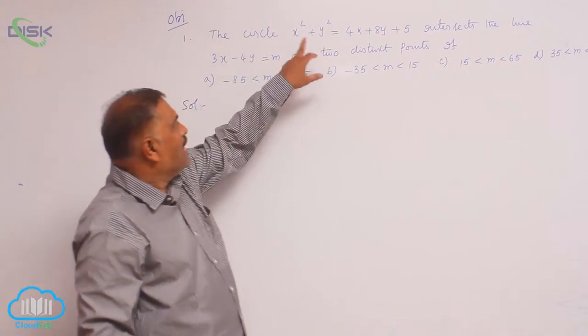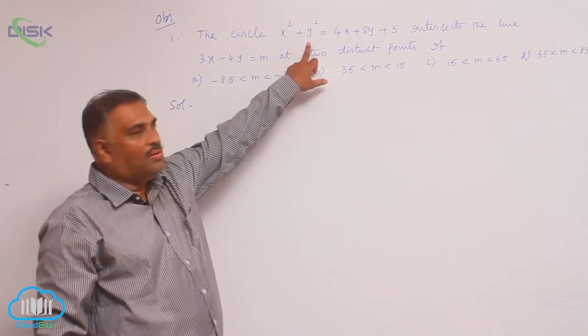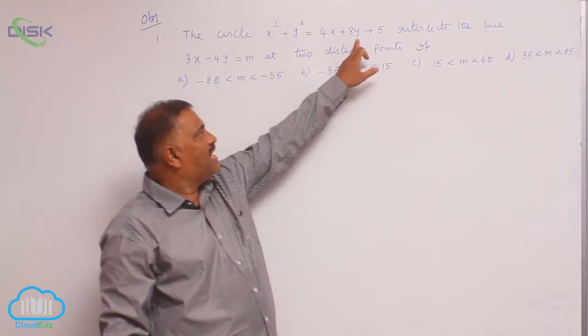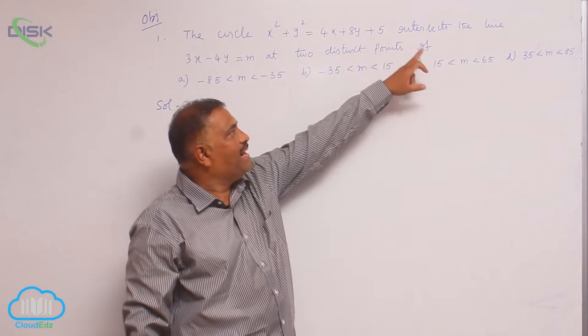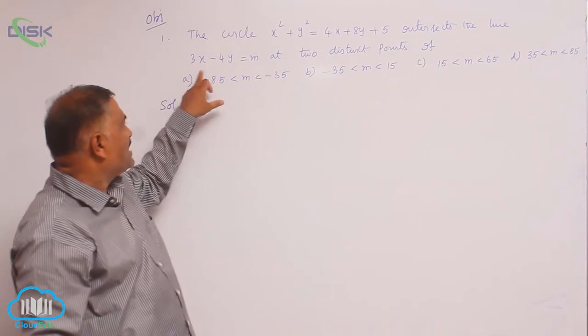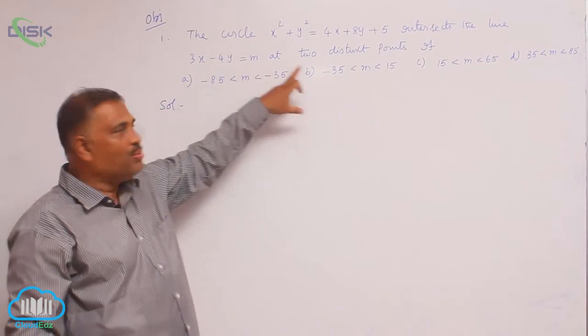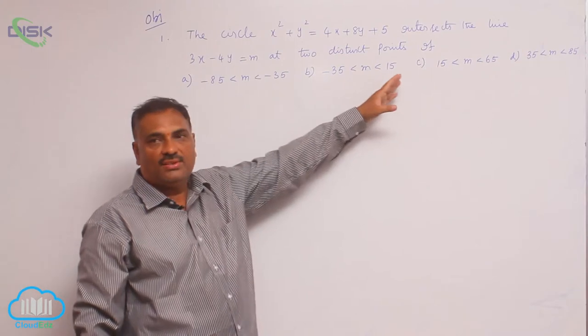The circle x² + y² = 4x + 8y + 5 intersects the line 3x − 4y = m at two distinct points.